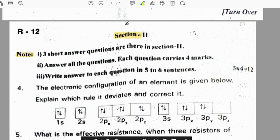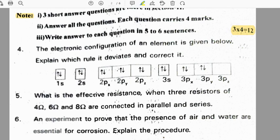Section 2, we need to attempt 3 questions, no internal choice. Each question carries 4 marks, total is 12 marks for this section. Fourth question: the electronic configuration of an element is given below. Explain which rule it deviates and correct it. So 1s², 2s², 2p⁶, 3s², 3p⁴.